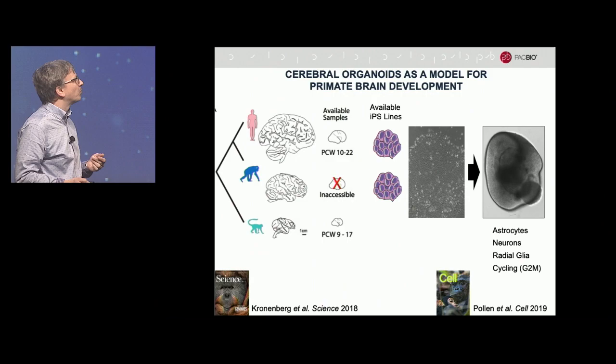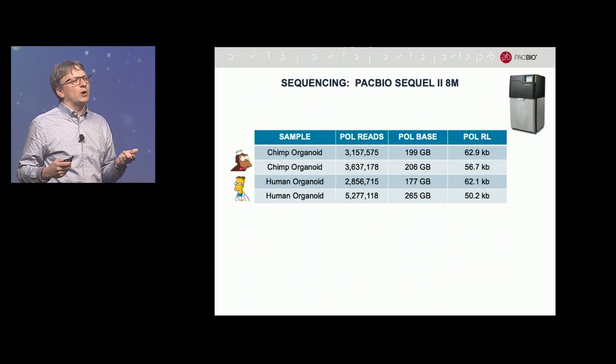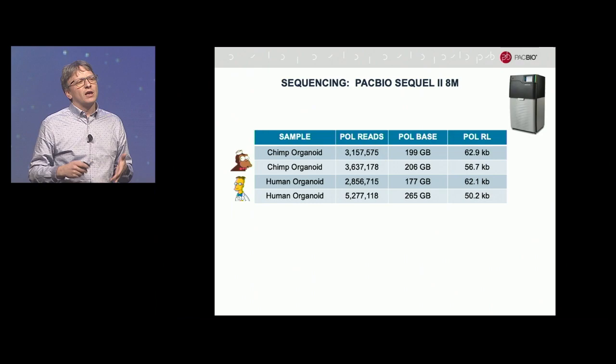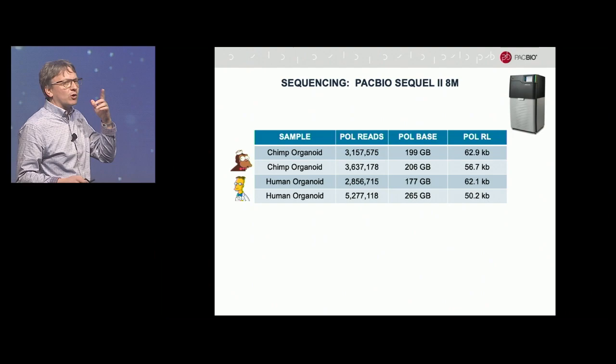For this project we switched to the new SMRT Cell 2 platform. We sequenced two 8-million zero-mode waveguide SMRT cells of each of the chimp and human organoid samples, achieving very long read lengths over 50 kilobases. Since the average molecule in a single-cell cDNA experiment is 2 to 5 kb, we get very high consensus accuracy by going round and round the molecule.